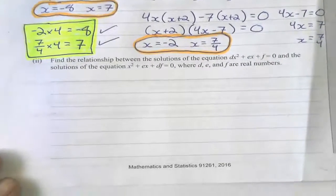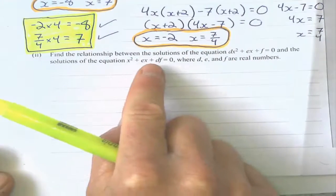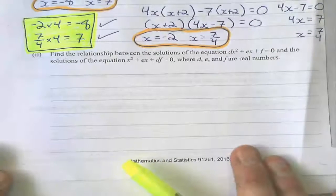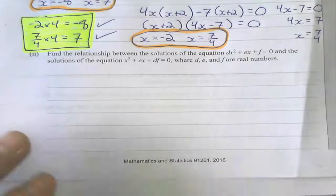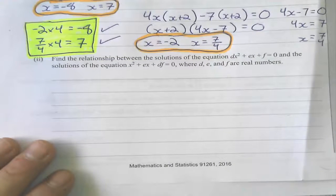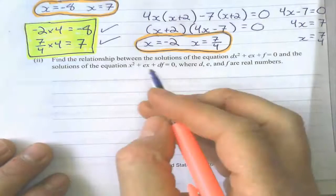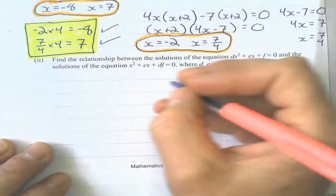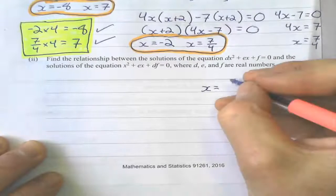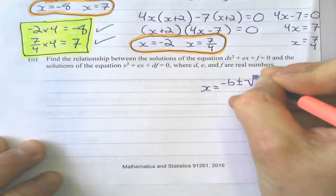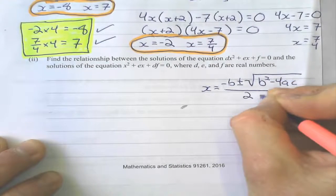Moving on — probably the most challenging one of this section. Find the relationship between the solutions of this equation and the solutions of this equation, where these are real numbers. Most people would look at this and really have no clue where to start — including myself. Factorizing isn't going to get me anywhere, so I just did the quadratic formula: x equals the opposite of B, plus or minus the square root of B squared minus 4AC, all over 2A.